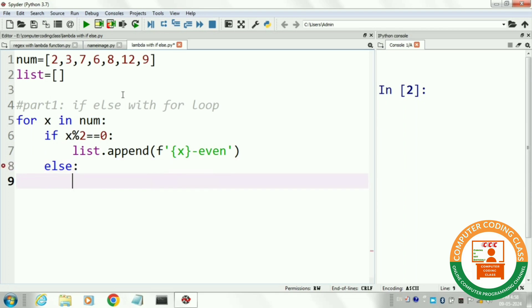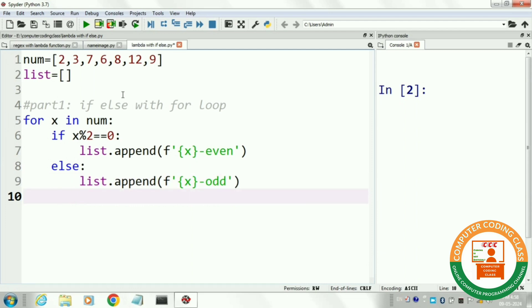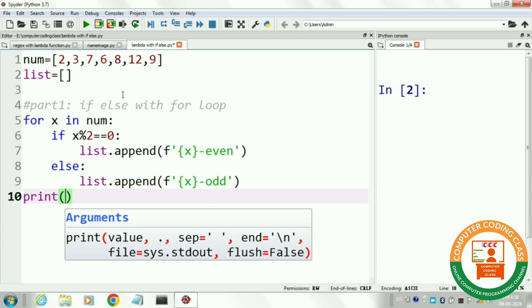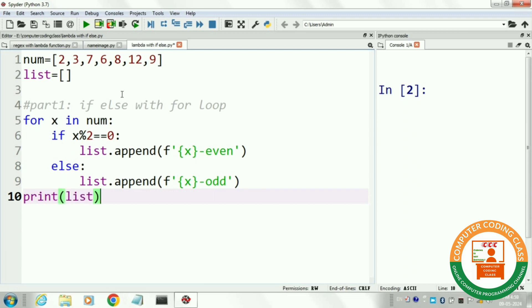In else-condition, we append the number as an odd number. Next, print the newly created list. This list has both even and odd numbers. Next, run the program.